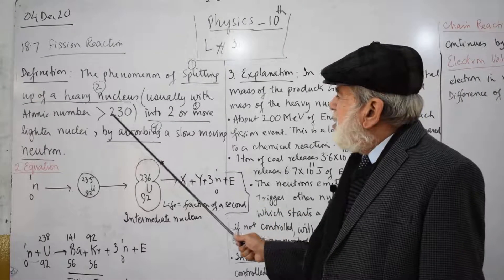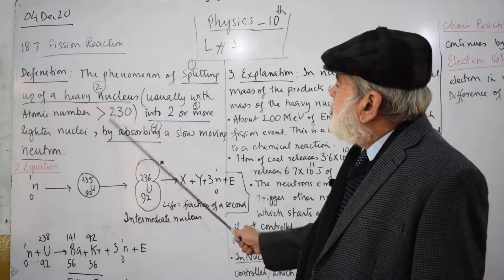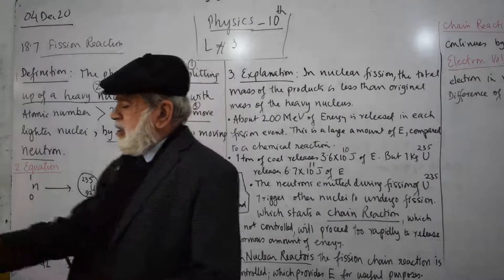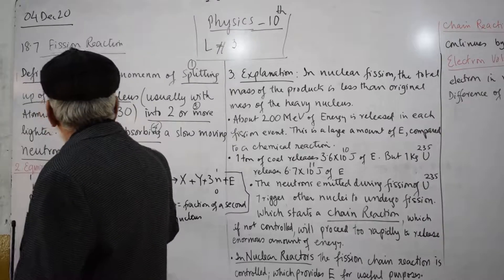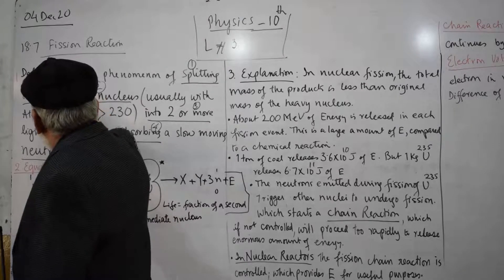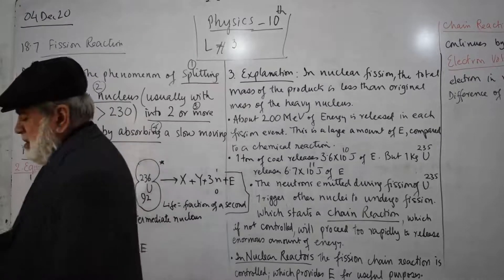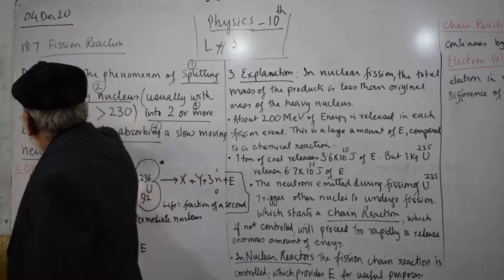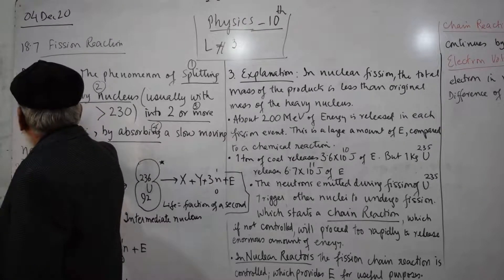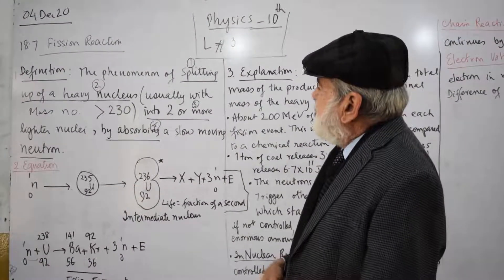Normally, the heavy nucleus is the one whose atomic number is greater than 230. Atomic number greater than 230 or you can say atomic mass greater than 230 is known as a nuclear fission.